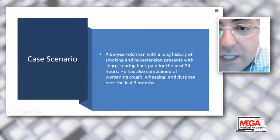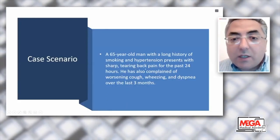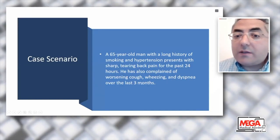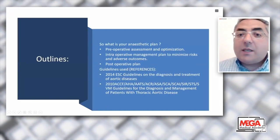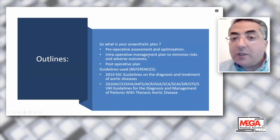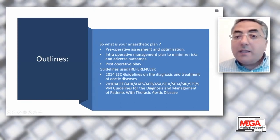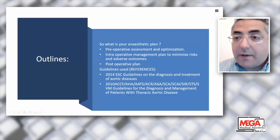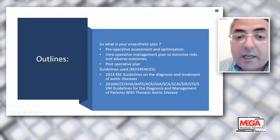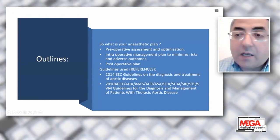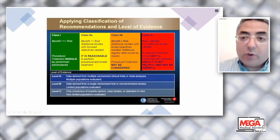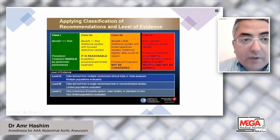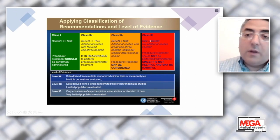Consider this case scenario: a 65-year-old man with a history of smoking and hypertension presenting with sharp tearing pain for the past 24 hours, also complaining of worsening cough, wheezing, and dyspnea over the last three hours. How do you approach this patient? The three important elements are: pre-operative assessment and optimization, intraoperative management with minimizing risks and adverse outcomes, and the post-operative plan. We discuss this guided by the 2014 European Society guidelines and 2010 American Heart Association guidelines for thoracic aortic disease management.